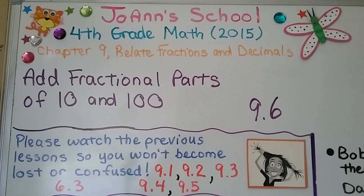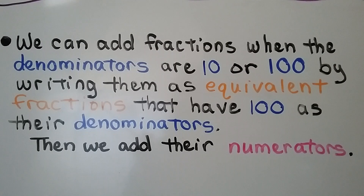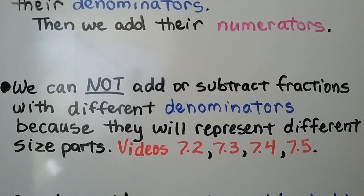Lesson 9.6. We're going to add fractional parts of 10 and 100 as tenths and hundredths. We can add fractions when the denominators are 10 or 100 by writing them as equivalent fractions that have 100 as their denominators, then we add their numerators. We cannot add or subtract fractions with different denominators because they represent different sized parts. We learned about this in chapter 7, and those videos are linked in the description.